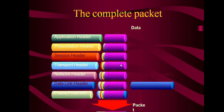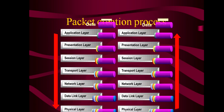When data moves from the upper layer to the lower layer, each layer adds its own header. On the other end, when data moves from the lower layer to the upper layer, each layer removes the header added by the corresponding layer. For example, the header added by the data link layer is removed by the data link layer on the other side; the header added by the network layer is removed by the network layer on the other side; and the header added by the transport layer is removed by the transport layer on the other side. That is why we call it peer-to-peer communication.